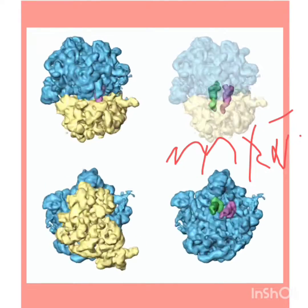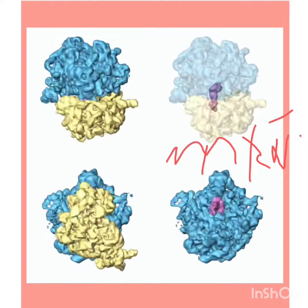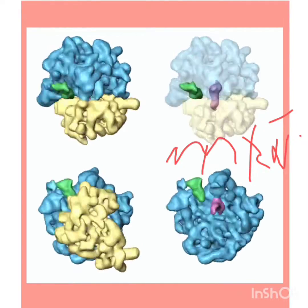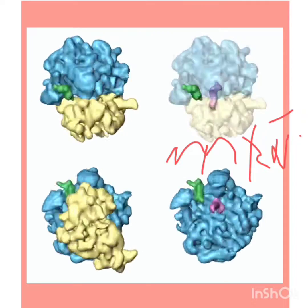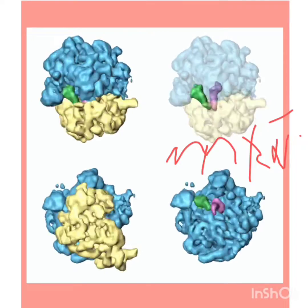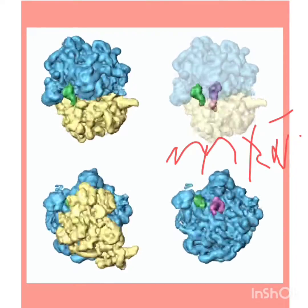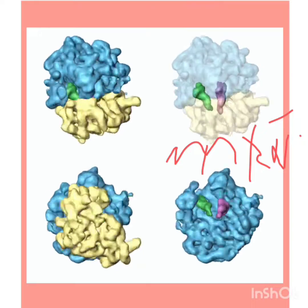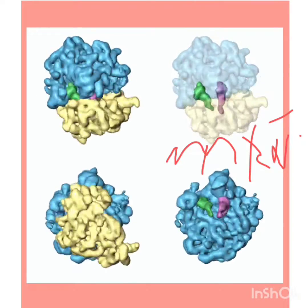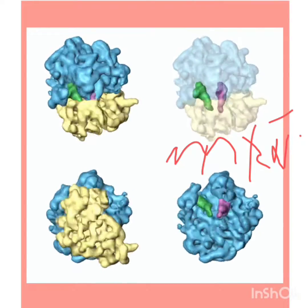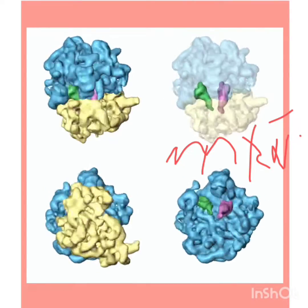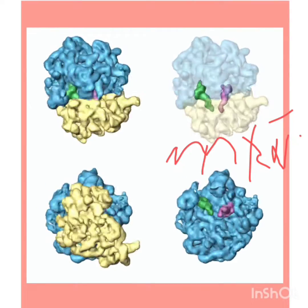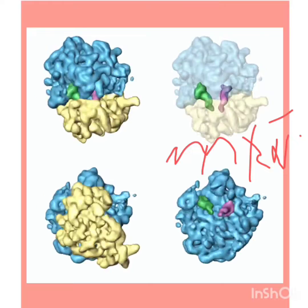What are the colors of ribosomes? Mostly ribosomes are found in red color. Do plants have ribosomes? Yes, because plant cells are eukaryotic ones.